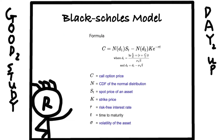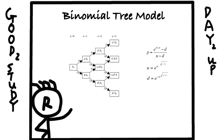Now it's time to get into the pricing models. There are mainly two types: the Black-Scholes model and the binomial tree model. The Black-Scholes formula is pretty complicated, but you don't need to memorize it. You just need to understand how the important factors — strike price, underlying asset price, interest rate, volatility, and time — relate to the price of an option contract. The Black-Scholes model and the Greeks are interrelated, which is why understanding the Greeks helps you understand the pricing models.